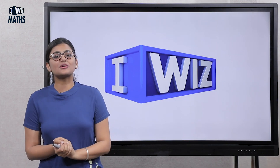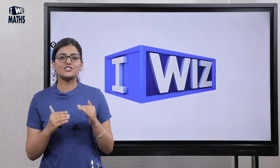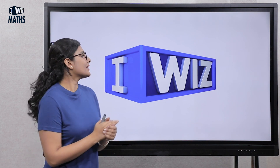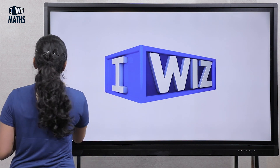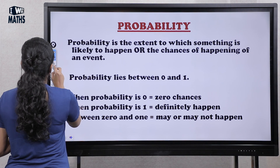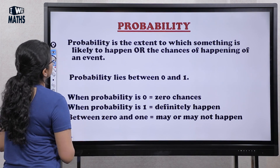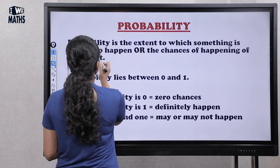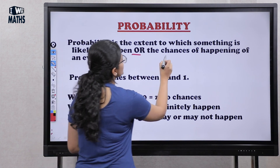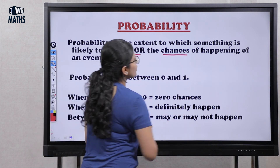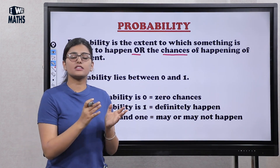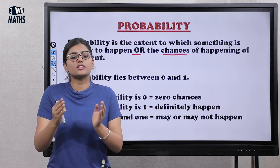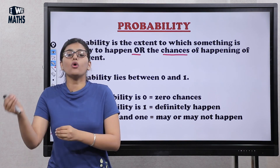Hello friends, my name is Gurleen and today we will learn about probability. The definition is that probability is the extent to which something is likely to happen, or the chances of happening of an event — what is the possibility of any event, or the chances that it will happen?